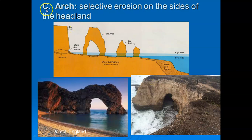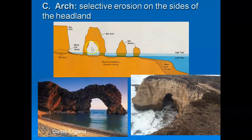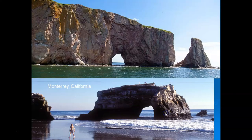A third erosional landform found along rocky headland coasts is arches, which make coasts beautiful. These form by selective erosion on the sides of the sea cliff — high wave attack at about mean tide level blasts into the rock and into the joints, ultimately removing the sides of the sea cliff. Here are examples in England; the British Isles really do have beautiful rocky headland coasts. You can see the blasting through that eventually makes an arch, and here's one in Monterey, California that has actually detached.